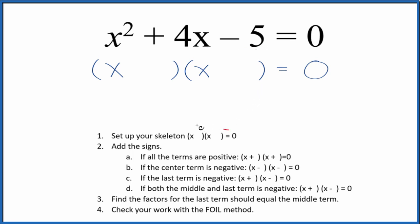We're going to start with a skeleton equation. So we have a skeleton equation here, then we're going to add the signs. So I see you have a positive and a negative here. If the last term is negative, we'll put a positive and negative in our skeleton equation, like this.